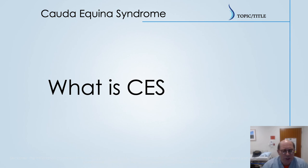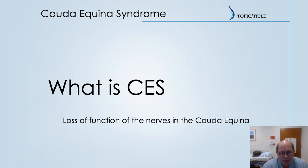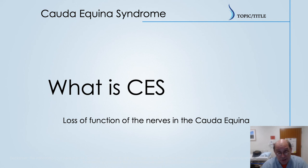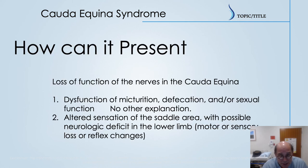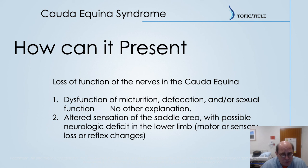Reviewing what is cauda equina syndrome: it is a loss of function of the nerves in the cauda equina — those lower motor neurons heading down the legs. A more specific definition used for research includes two key parts: dysfunction of micturition, defecation, and/or sexual function. When we talked about the different nerves, I mentioned motor, sensory, and autonomic. This impacts the ability to urinate, to pass stool, and sexual function.